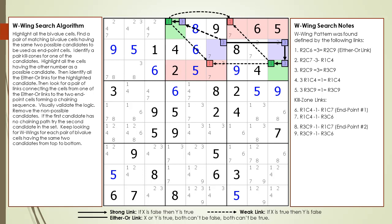The logic for how the W-Wing works will now be discussed. There are four scenarios to consider, and all four revolve around the either-or link in the middle of the W-Wing. First, we have a value of 3 in cell 2,6.